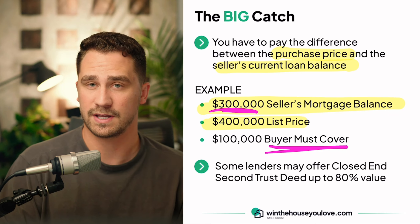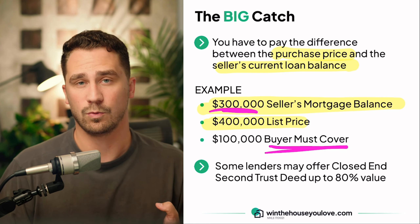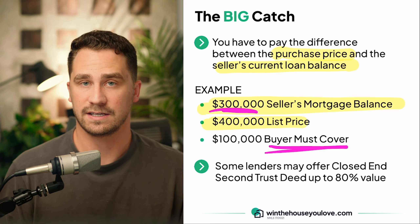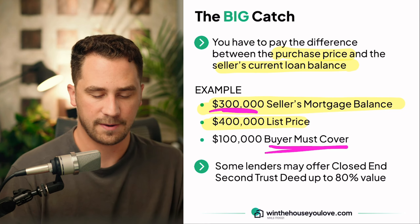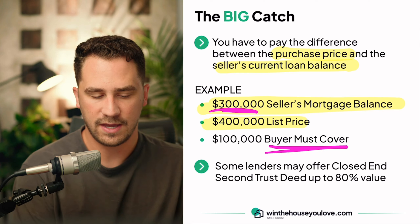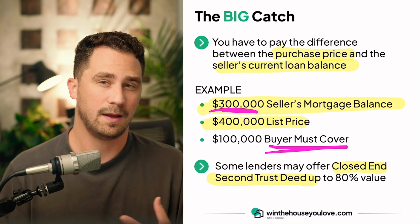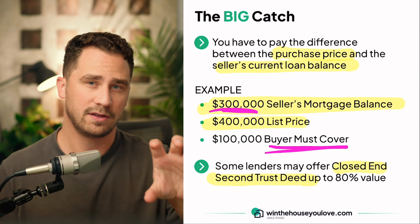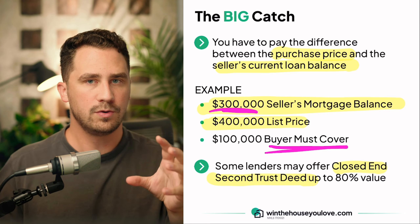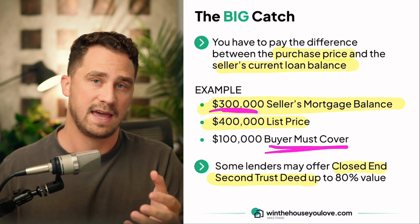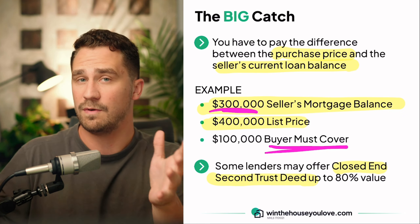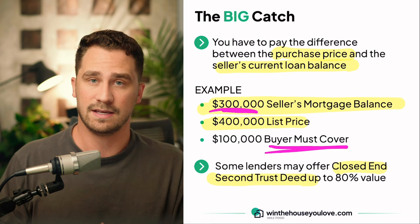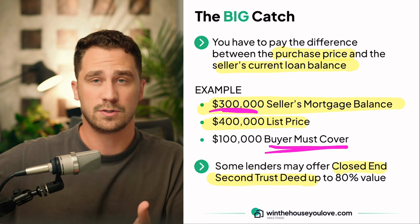In addition, there are closing costs just like any other purchase — things like a title search, taxes, homeowner's insurance, recording fees, and possibly a transfer tax fee. Some lenders may offer what's called a closed-end second trust deed up to 80% value. Basically, this difference between the seller's mortgage balance and the list price — for most people you're going to expect to need to come up with that difference in cash. If the seller doesn't have a ton of equity, that difference might be small. However, in circumstances like this, it could be $100,000.